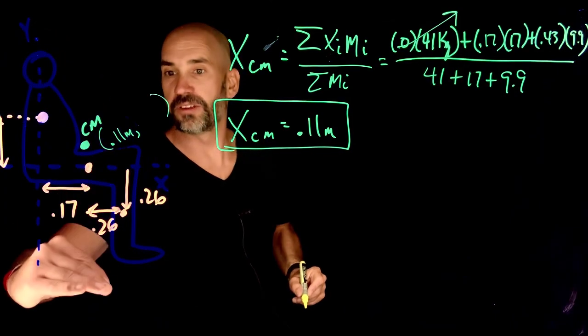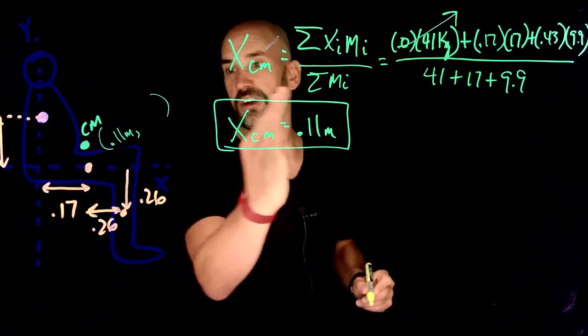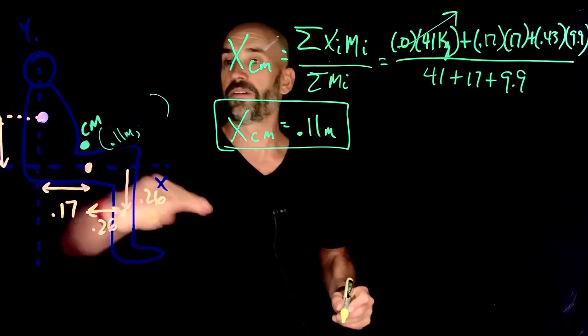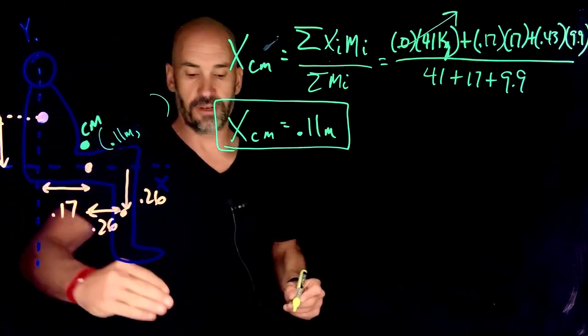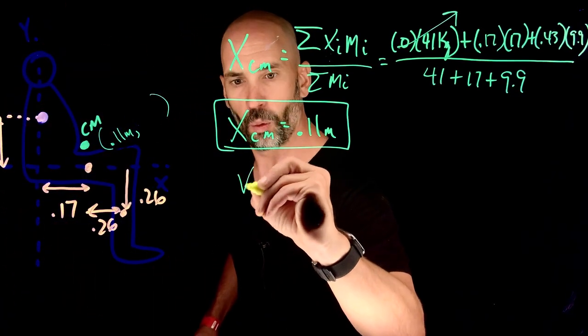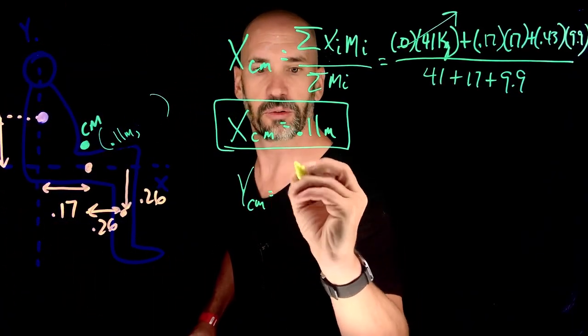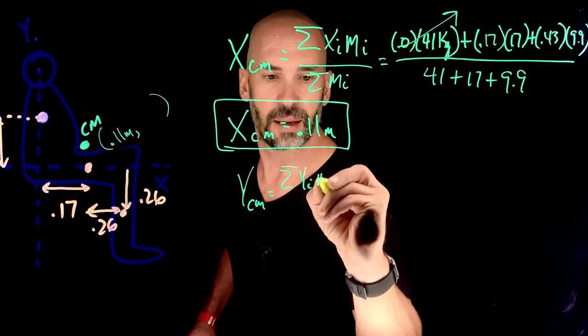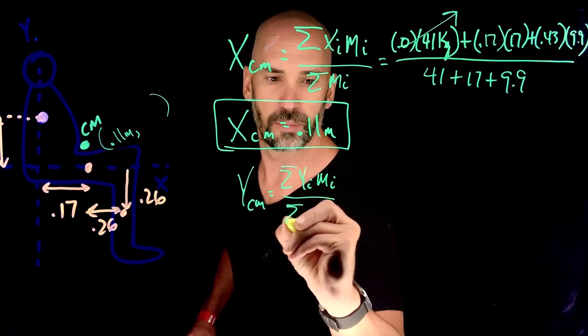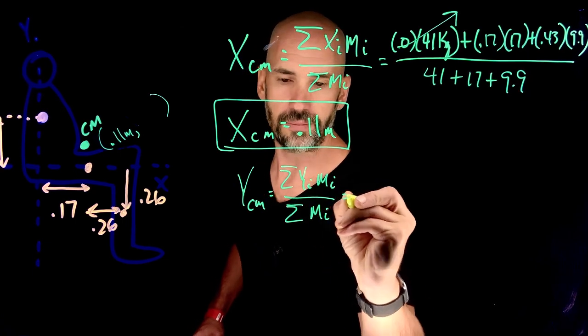Now we've got to do the same thing for the up and down. So this gives us the coordinate of the center of mass in this dimension. Now we want to find the coordinate of the center of mass in this dimension.